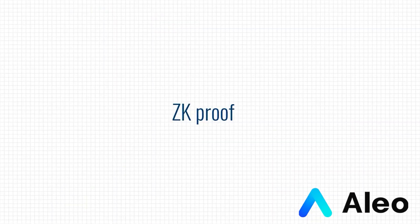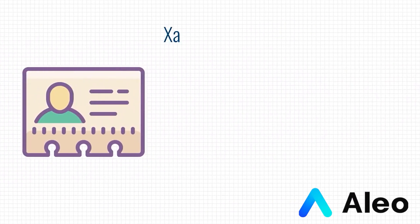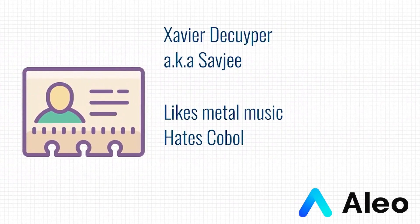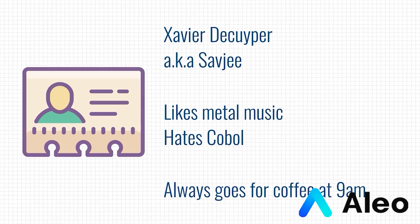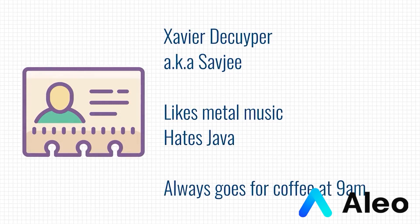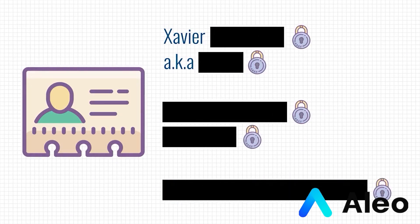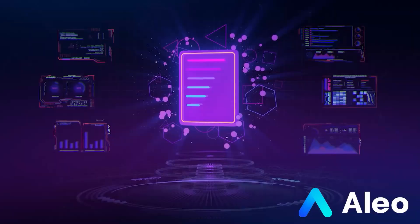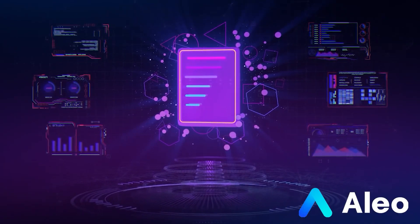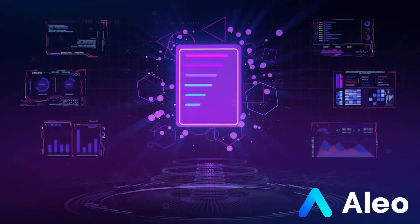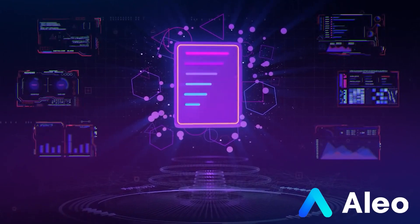Zero-knowledge helps to solve this problem. Let's say a lender can check your financial history, credit rating and proof of residence without knowing any specific data about you. Zero-knowledge applications will allow you to hide your information but give creditors the ability to verify that it meets the financial criteria without disclosing any of it. This is a best-of-two-worlds scenario that combines applications not only in traditional finance but also in the DeFi world.